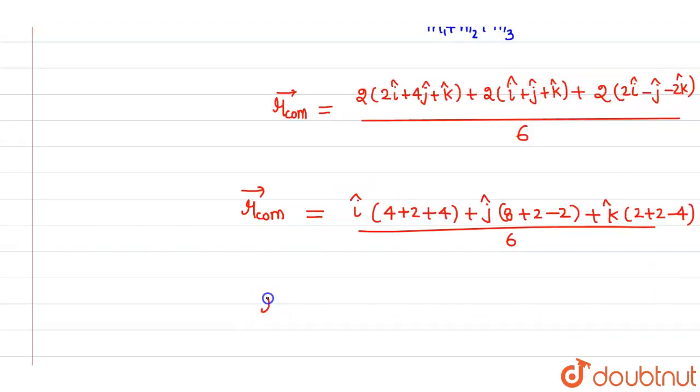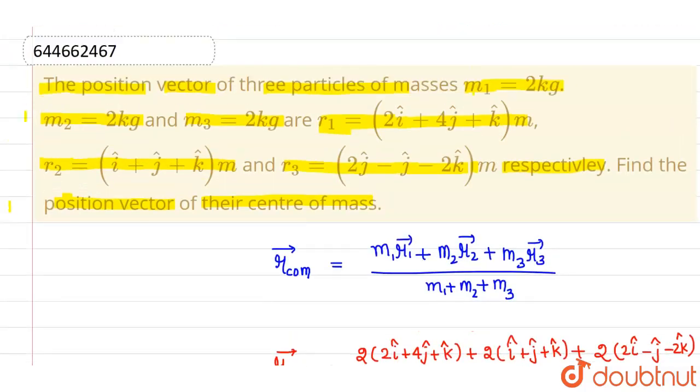On further simplifying, the position vector of center of mass is: 4 + 4 = 8, 8 + 2 = 10, so this is 10i cap + 8j cap + 0k cap divided by 6. This is the position vector of center of mass. I hope you understood, thank you.